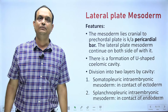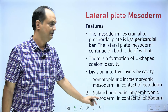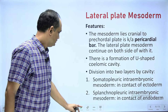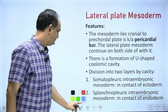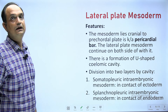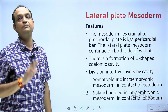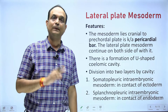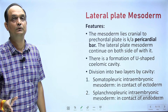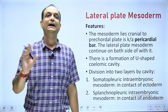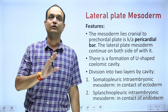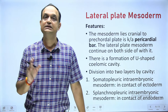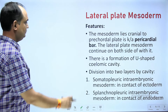The intra embryonic coelom divides the mesoderm into two layers: somatopleuric and splanchnopleuric. Similarly, the extra embryonic mesoderm is also divided into somatopleuric and splanchnopleuric parts — but in the extra embryonic case, division occurs by formation of the chorionic cavity, whereas here it is the intra embryonic coelom.